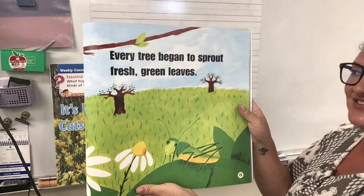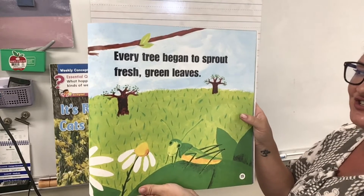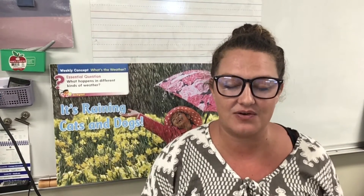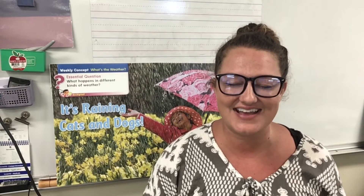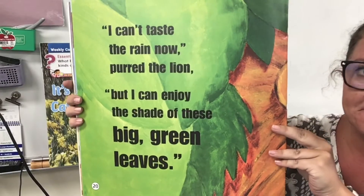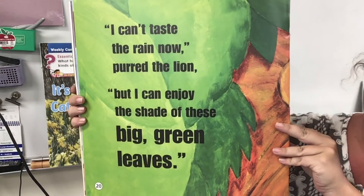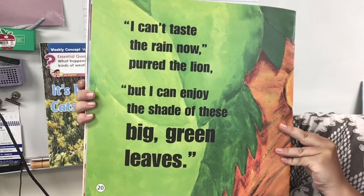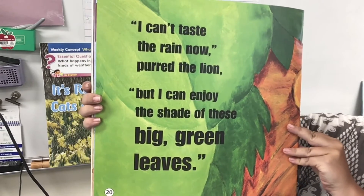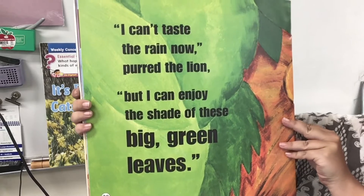Then the rain stopped. And everywhere, long, feathery grasses grew from the soil. We know that water helps plants grow — that makes sense. Every tree began to sprout fresh, green leaves. Let's take a minute to imagine what it feels like right now in the story. The rain has stopped, the sun came out — it's probably getting warmer.